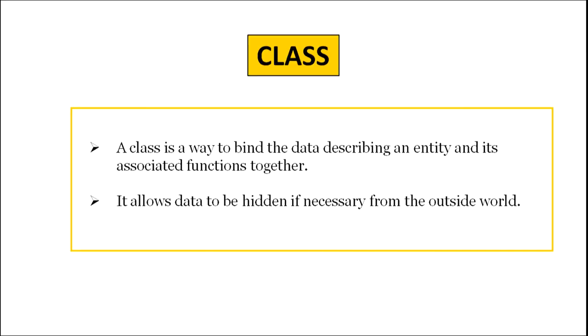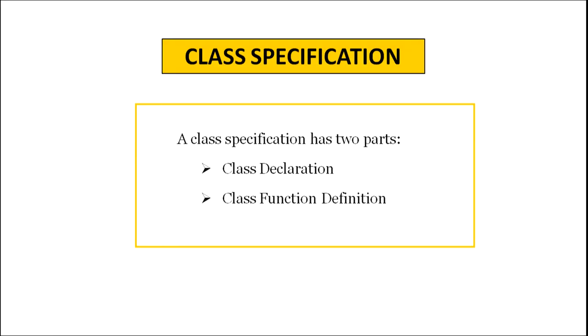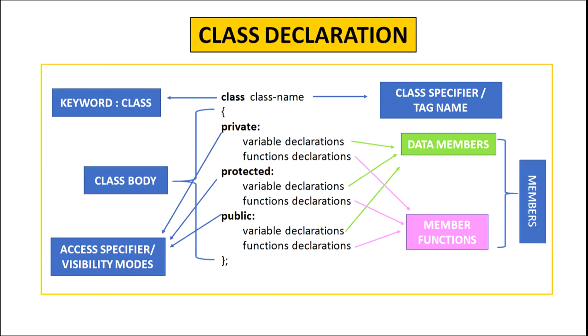A class in object-oriented programming is defined as a way to bind the data describing an entity and its associated functions together. It allows data to be hidden if necessary from the outside world. Class specification has two parts: class declaration and class function definition. The class declaration starts with the keyword class followed by the name of the class, also known as class specifier or tag name. The body of the class is enclosed within curly braces and is terminated by a semicolon. Within the class, the variables are called data members and the functions are called member functions. Together, data members and member functions are called members of the class.